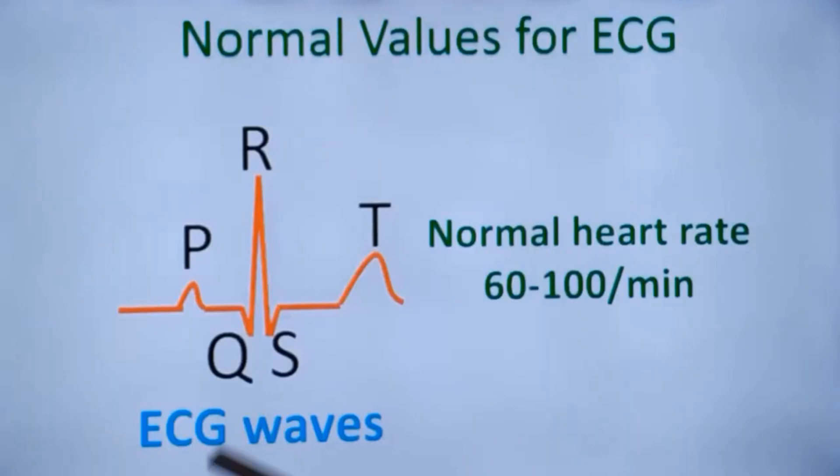These are the normal waves which you expect on the ECG. And normal heart rate in an adult is 60 to 100 per minute.